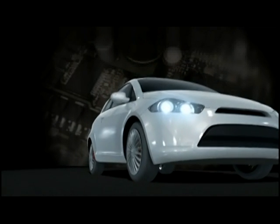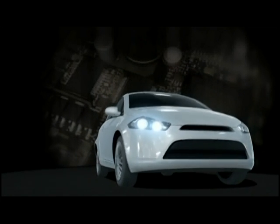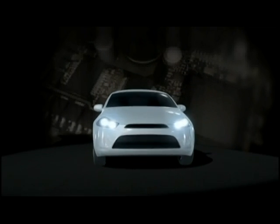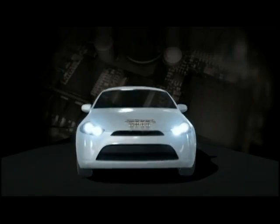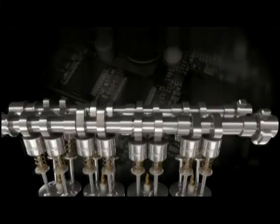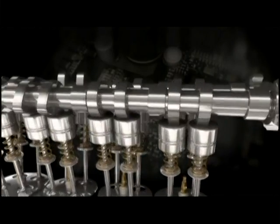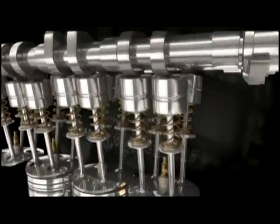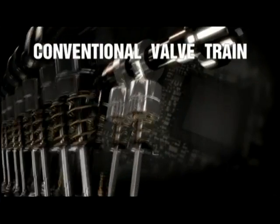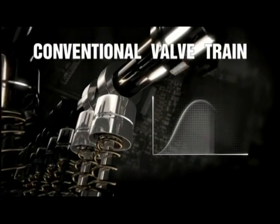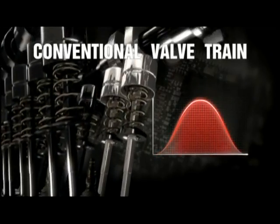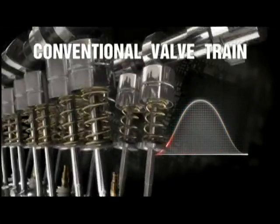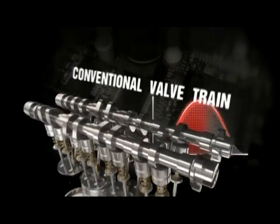In conventional internal combustion engines, cylinder air charge through the intake valve is controlled by the rotation of a camshaft through a simple throttle. The main disadvantages of this system are a waste of energy and a slow adjustment to the continuously changing driving conditions.